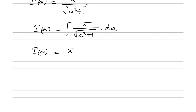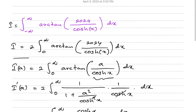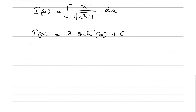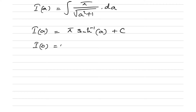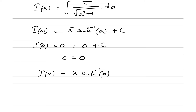So I(a) = π · arcsinh(a) + C. To find C, we plug in a = 0: I(0) is zero because arctan(0) = 0, and arcsinh(0) = 0. Therefore C = 0, giving us I(a) = π · arcsinh(a).